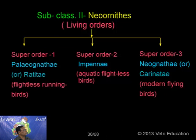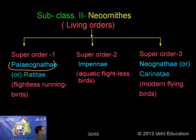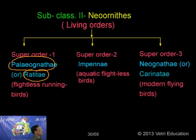Now let's proceed towards the next part — about the modern birds. We have so far studied the ancient birds, Class 1, Archaeornithes. Now, the Neornithes, which includes mainly the living modern birds. Taking only the living orders and leaving the extinct orders, it is divided into three super orders. The first one, Palaeognathae, also called Ratitae, which includes all the flightless running birds — terrestrial birds, not aquatic forms.